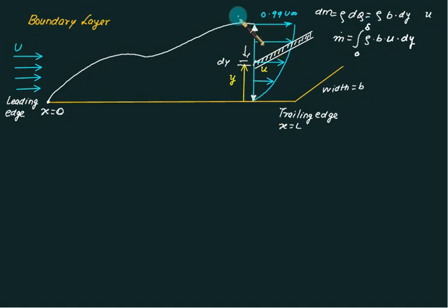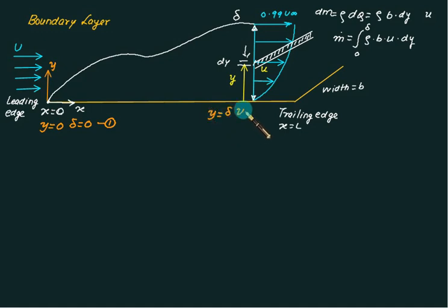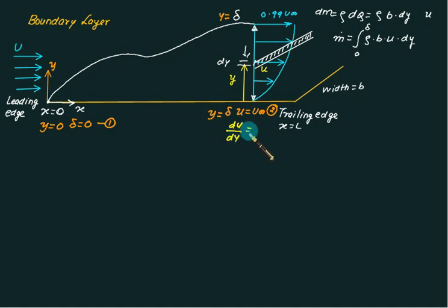The axis system is fixed at the leading edge: the x-axis runs along the plate and the y-axis is perpendicular. We can now develop the boundary layer conditions. First boundary condition: at y equal to 0, delta is also equal to 0. Second boundary condition: at y equal to delta, u equal to u-infinity. Since this value is maximum, differentiating gives the third boundary condition: du/dy at y equal to delta must equal zero. All velocity profiles must satisfy at least these three conditions.